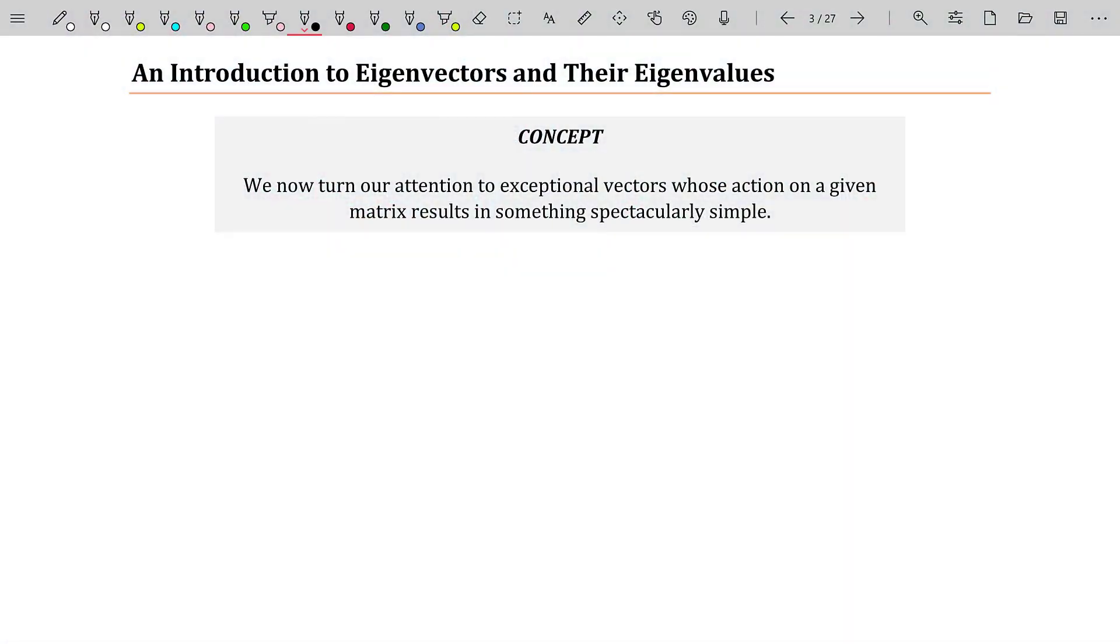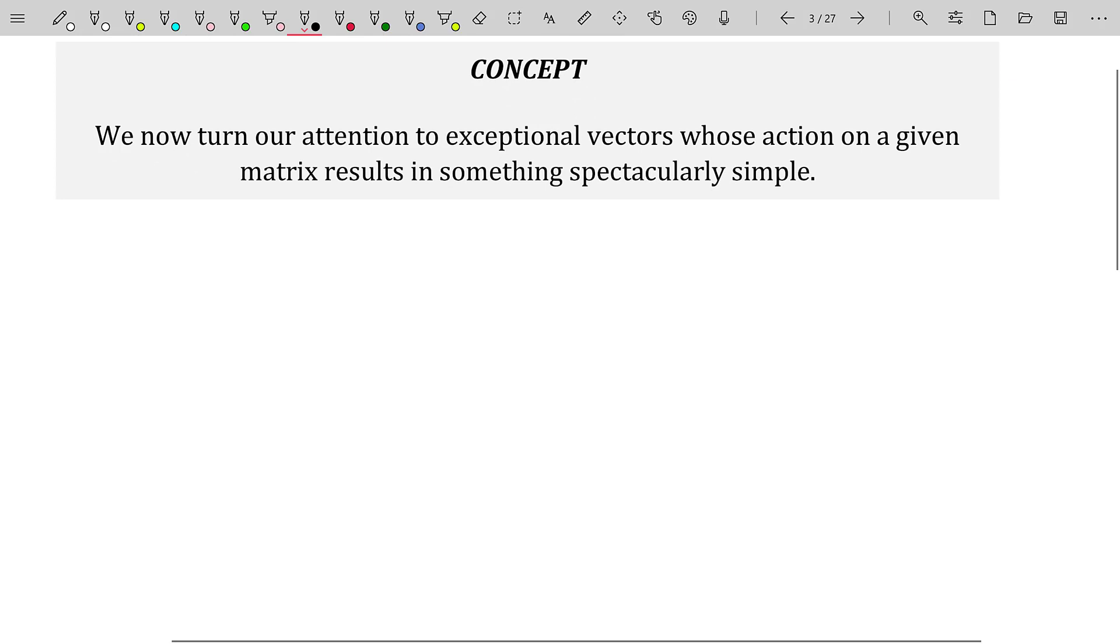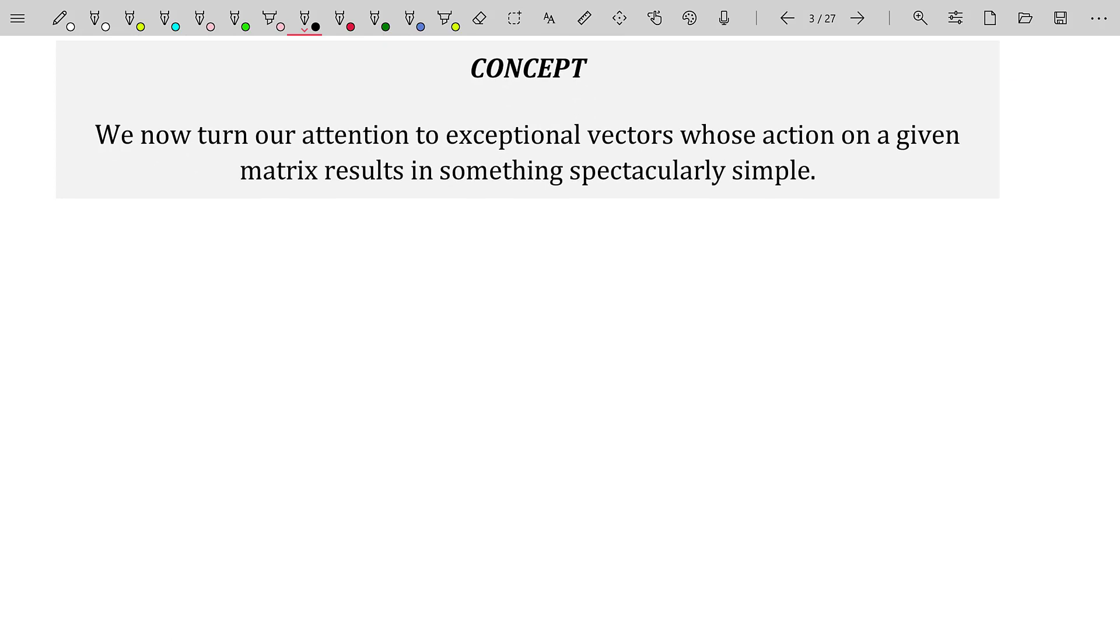Hello, my name is Roy Simpson, professor of mathematics at Cosumnes River College in Sacramento, California. This video is for linear algebra students who are now entering into a topic called eigenvalues and eigenvectors. This video is just going to be a gentle introduction to both of those topics. We now turn our attention to exceptional vectors whose action on a given matrix results in something spectacularly simple.